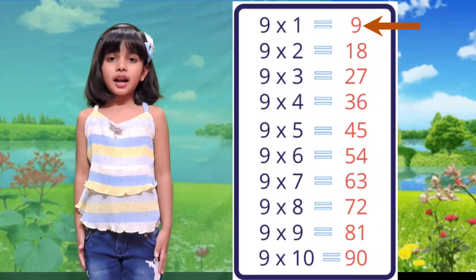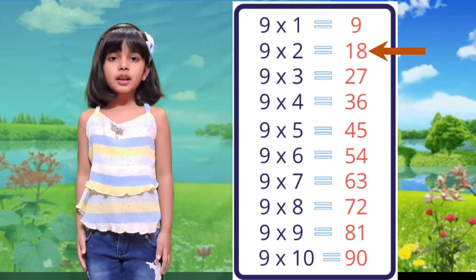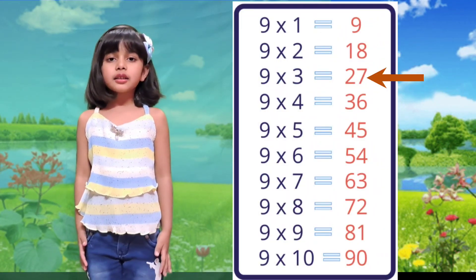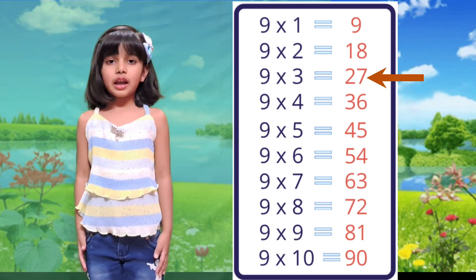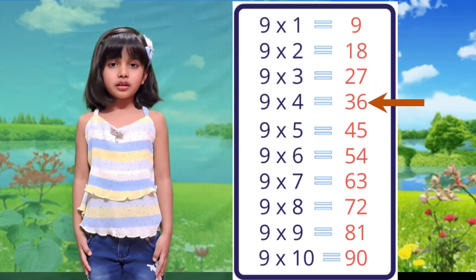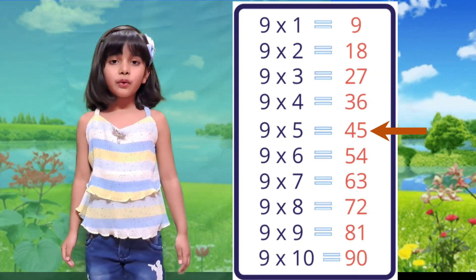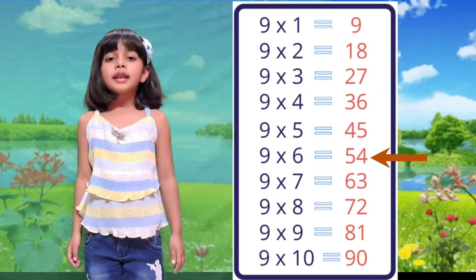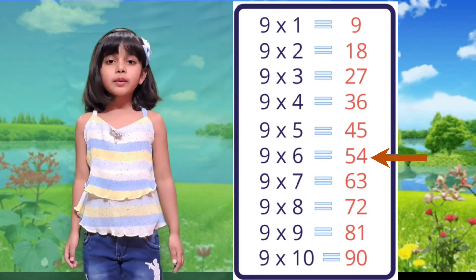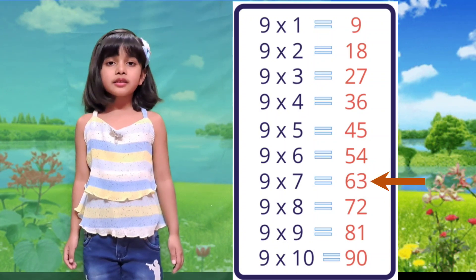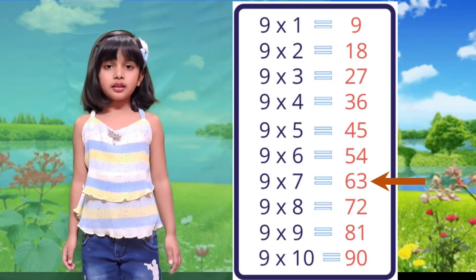Table of 9. 9×1 is 9, 9×2 is 18, 9×3 is 27, 9×4 is 36, 9×5 is 45, 9×6 is 54, 9×7 is 63.